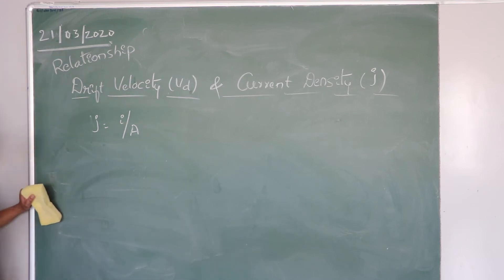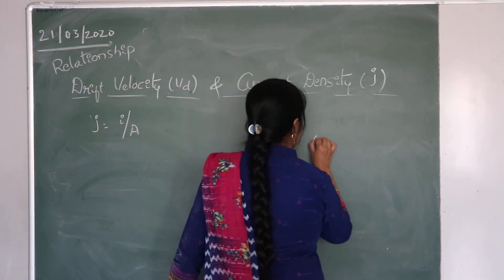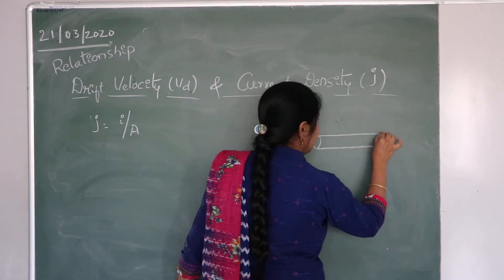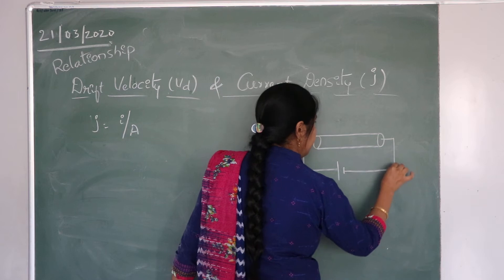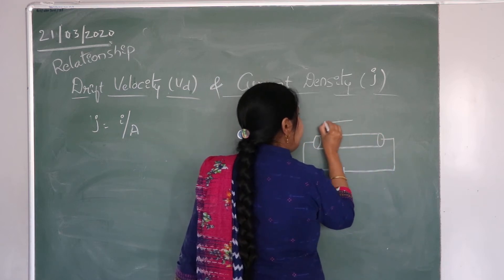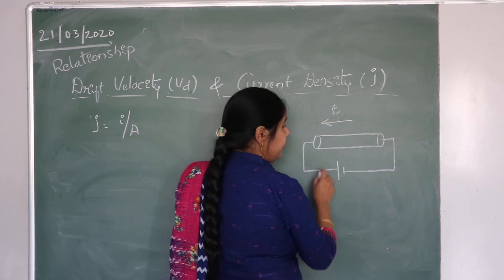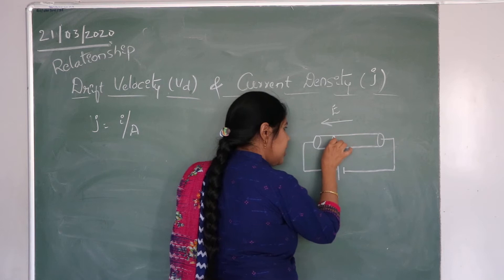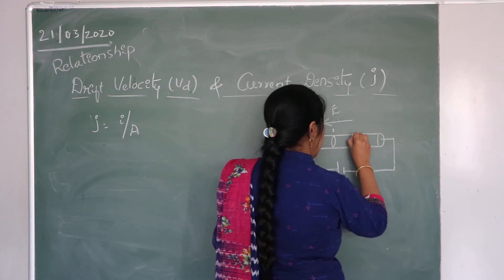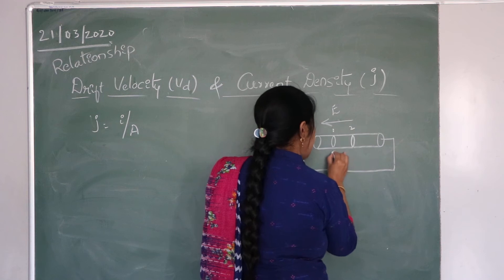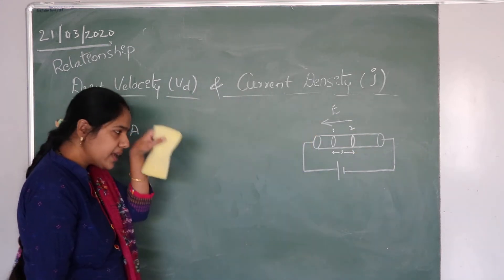Now we are going to establish a relationship between drift velocity and the current density J. Here I am taking a conductor and connecting a battery to it. I am applying an electric field of a certain strength. I am taking one cross-sectional area, which we call cross-sectional area 1, and another cross-sectional area 2. The distance between them I am taking as L.